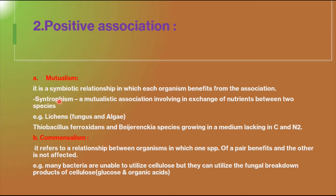For example, the bacteria Thiobacillus thiooxidans and Beijerinckia species, when growing in a medium lacking carbon and nitrogen, show syntropism. Beijerinckia is able to supply the carbon, and Thiobacillus is able to supply the nitrogen, so both exchange carbon and nitrogen while growing in that deficient medium.